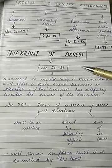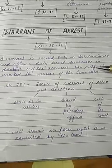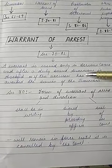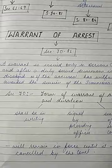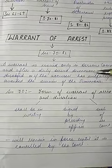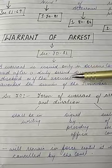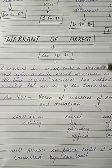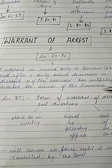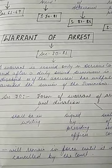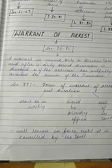So, regarding warrant of arrest from section 70 to 81, the most important thing is: when do we issue a warrant, and in which cases? A warrant is issued only in serious cases, and after a duly served summon is disobeyed. A warrant of arrest will be issued in a serious case when the summon has been served and disobeyed by the accused, or if the accused has willfully avoided service of the summon.